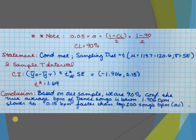Conditions are met as before. What changes in my sampling distribution? The mean — because now we're centered at whatever I viewed the difference to be. Make sure you showed your T-star for your confidence interval. The calculator spits it out, but make sure you've got your formula and you're identifying what kind of thing we're doing — a two-sample T interval. Based on our sample, we're 90% confident the true average beats per minute of dance songs is between 1.906 slower to 0.15 faster than the top 200 songs on average.